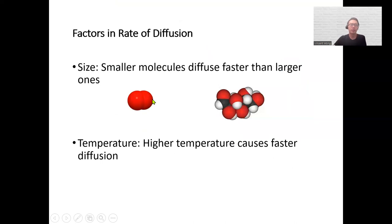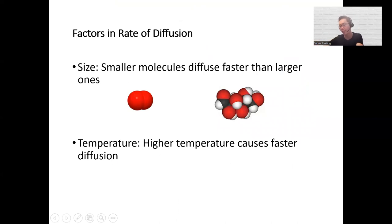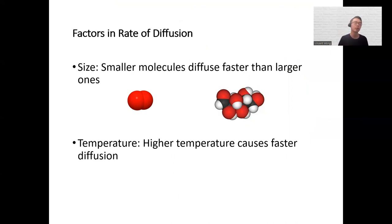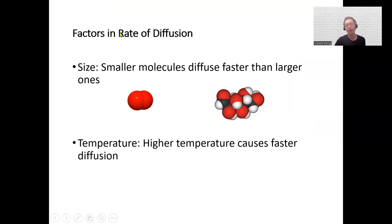There are different factors that affect the rate of diffusion — how fast a substance is going to spread. Number one, it's going to be affected by size. Things that are smaller tend to move faster compared to the larger ones.